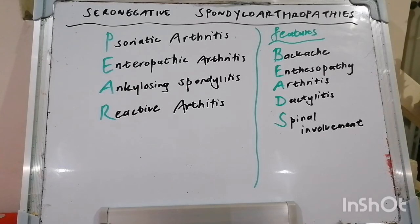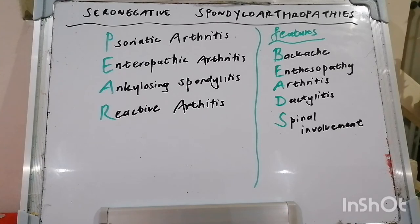In terms of diagnostics, the European Spondyloarthropathy Study Group criteria require that you have one of inflammatory spinal pain or synovitis — which is asymmetric or predominantly involving the lower limbs — plus one of: a positive family history, psoriasis, inflammatory bowel disease, urethritis, cervicitis, or acute diarrhea within a month prior to arthritis (which speaks to reactive arthritis), alternating buttock pain, enthesopathy, and sacroiliitis.